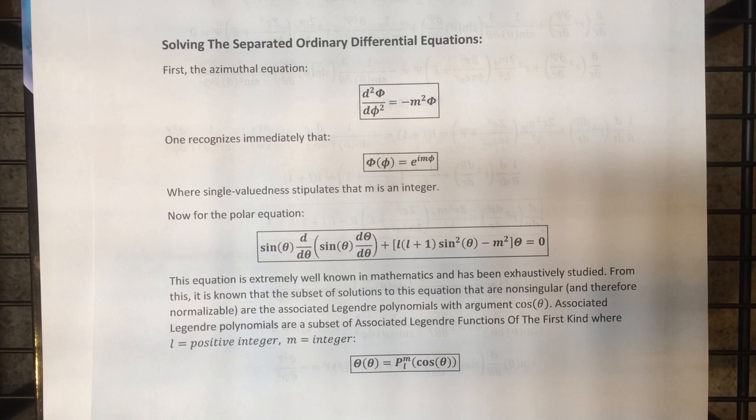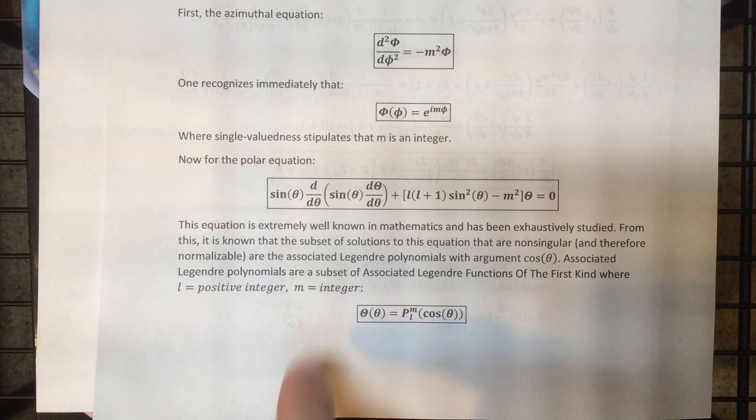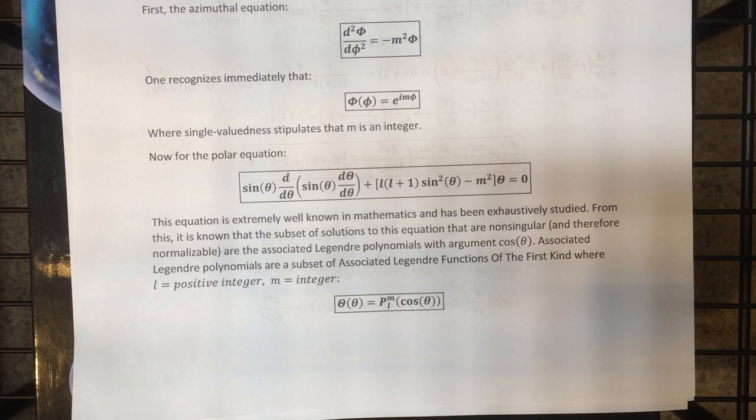From all that mathematics research, it's known that the subset of solutions that are non-singular are the associated Legendre polynomials of cosine theta. We need the non-singular part so it's normalizable, as mandated by quantum mechanics. The associated Legendre polynomials are a subset of the associated Legendre functions of the first kind, specifically where l equals a non-negative integer — the lowest value it can take is zero — and m equals integers.